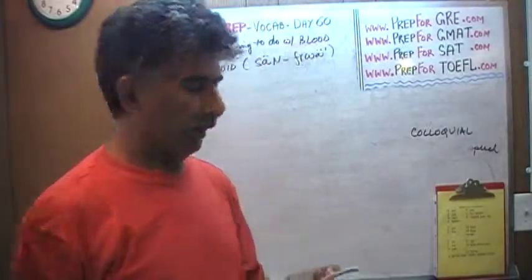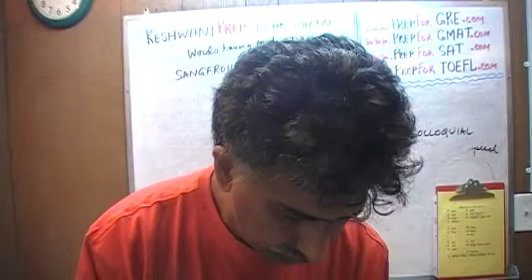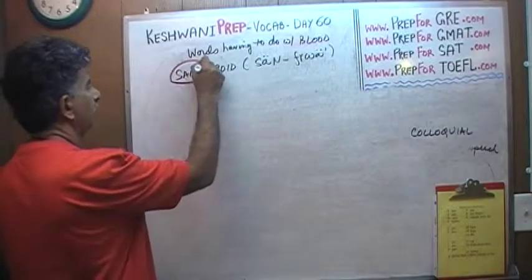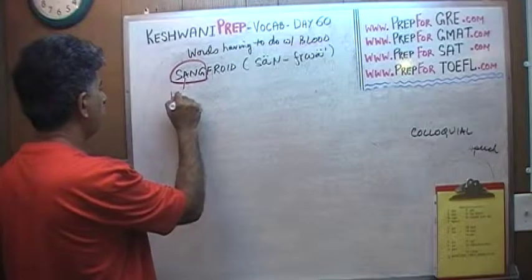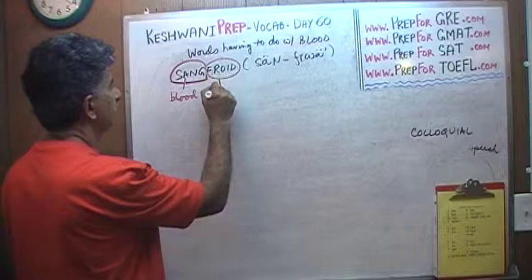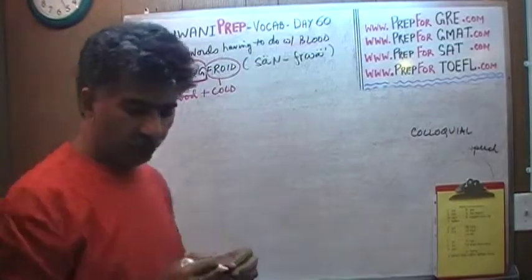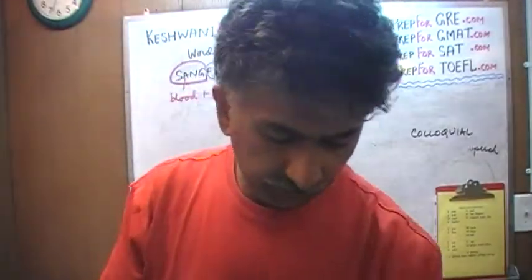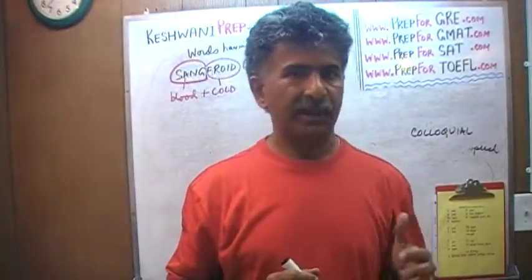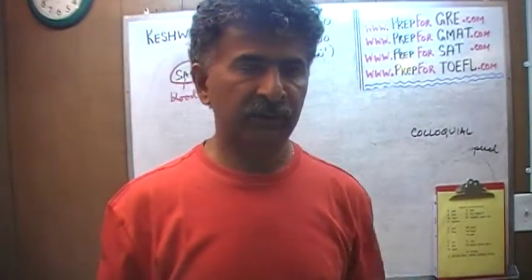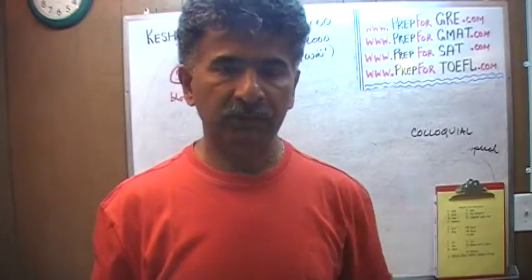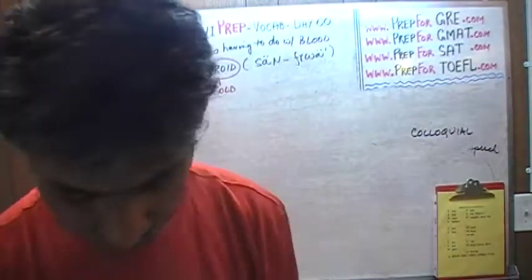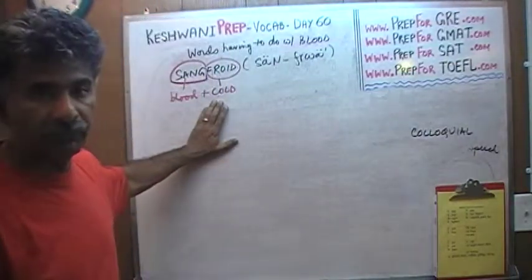The word is 'sang-froid.' Literally, it has two parts: the first part is a French word for blood, and the second part means cold. So 'sang-froid' means to have cold blood. Listen very carefully — don't confuse the meaning of this word with being cold-blooded in the English language, which means you have no emotions, you have no sympathy, you are callous.